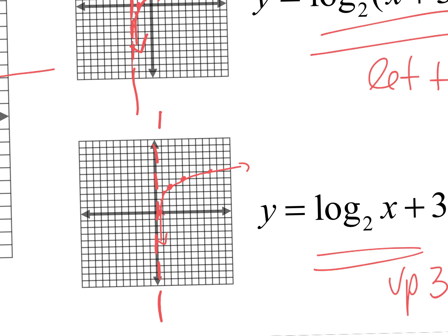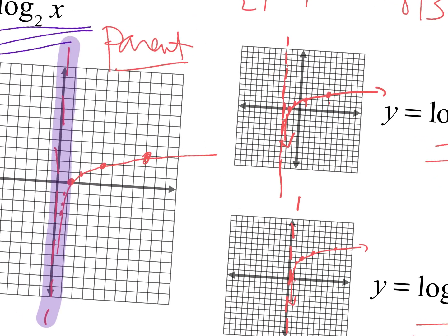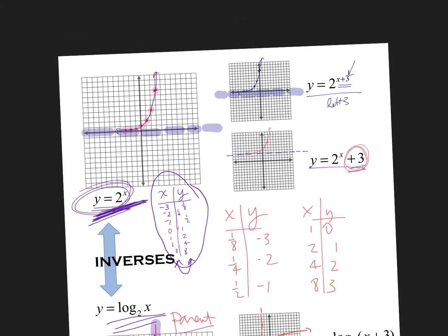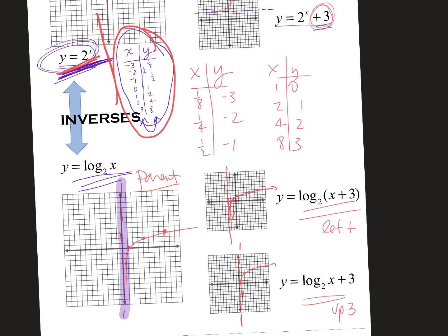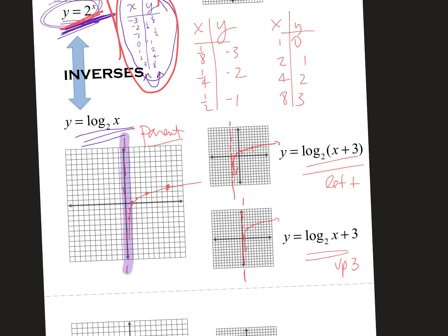But the most important part is can you come up with the XY chart for the exponential graph, the base model, right? Nothing with pluses or minuses. Literally just the base model. Then can you switch it so that the x is the y and the y is the x so you can get the parent graph for the log graph. And then lastly, can you move it around?